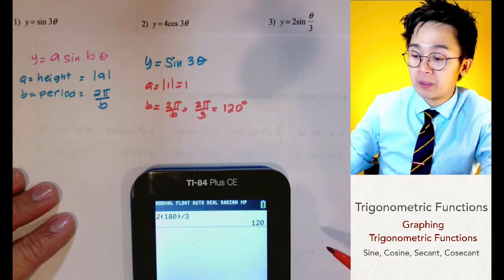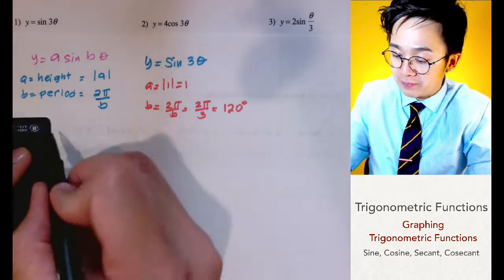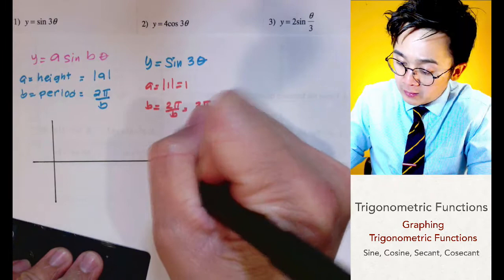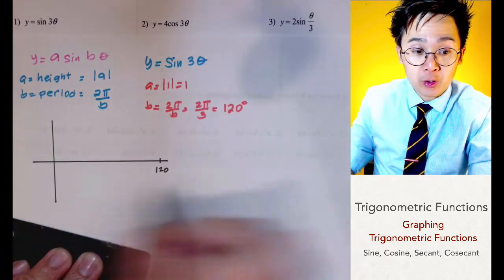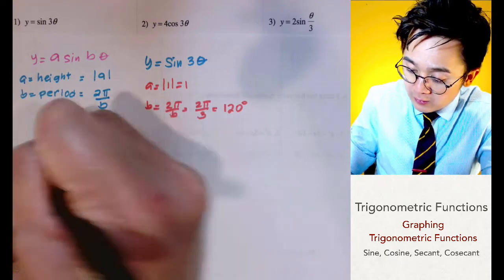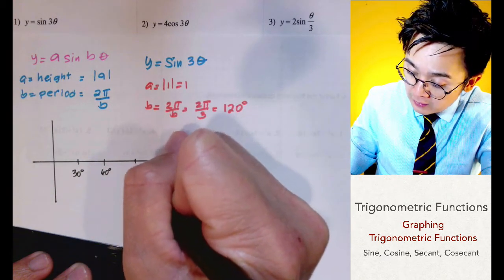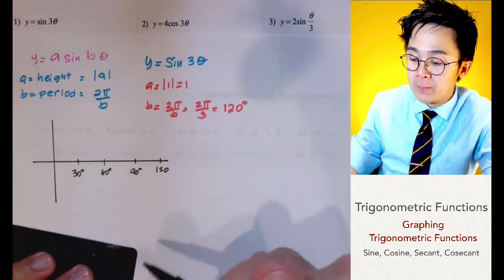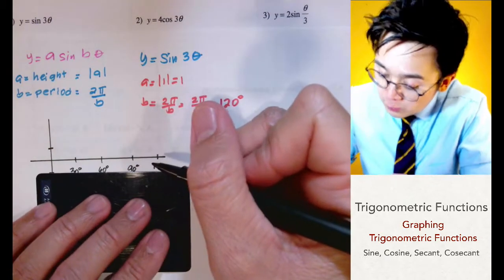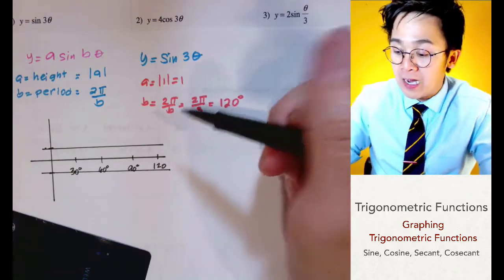So our first period goes from zero to 120 degrees. We draw a vertical and horizontal axis, and partition the period into four equal parts. Half of 120 is 60 degrees, half of 60 is 30 degrees, and 30 plus 60 is 90 degrees. The height of the graph is one unit, and this horizontal line serves as the axis for our sine function.